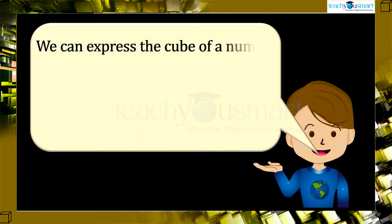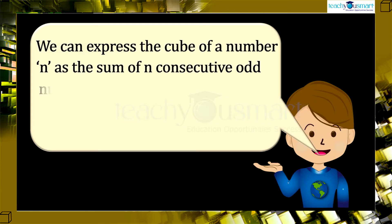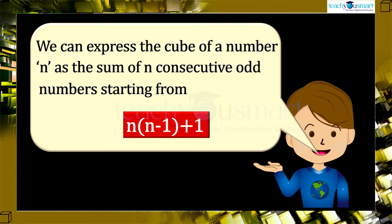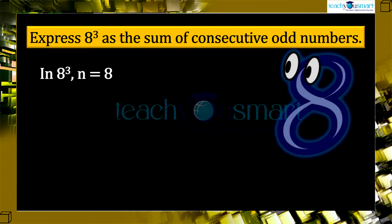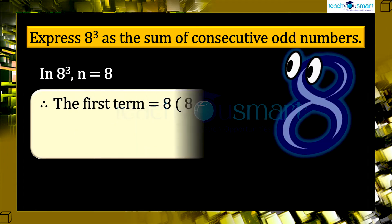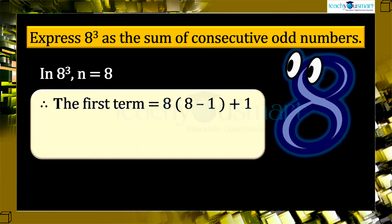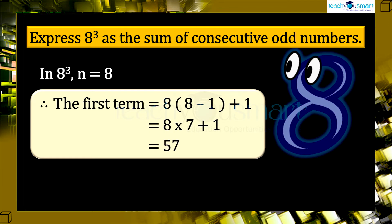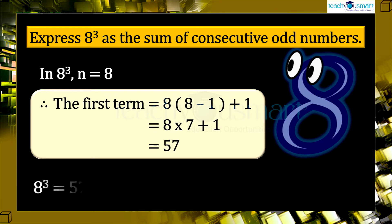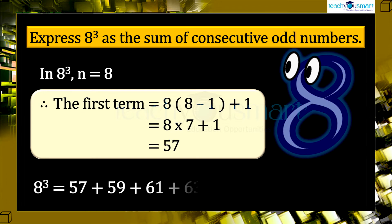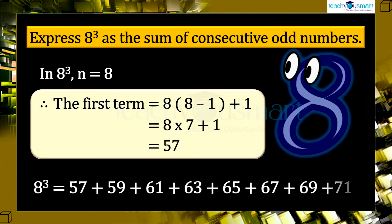That is, we can express the cube of a number n as the sum of n consecutive odd numbers, starting from n multiplied by (n minus 1) plus 1. Here, in 8 cube, n equals 8. Therefore, the first term in the sequence will be 8 multiplied by (8 minus 1) plus 1. So we can express 8 cube as the sum of 8 consecutive odd numbers starting from 57. That is, 8 cube equals 57 plus 59 plus 61 plus 63 plus 65 plus 67 plus 69 plus 71.